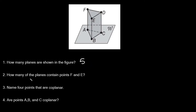Number two asks: how many of the planes contain points F and E? F and E are right here, and together they form this line FE. Two planes contain this line — one is this side of the triangular prism shown in blue, and the other is the top of the prism shown in purple. So the answer is two planes contain points F and E.